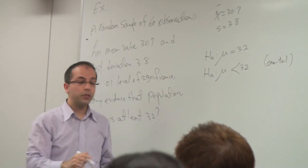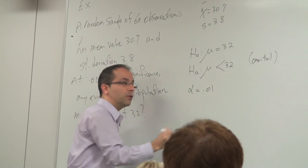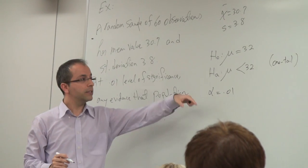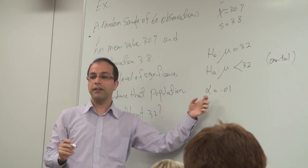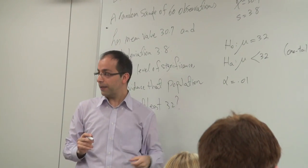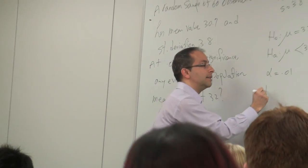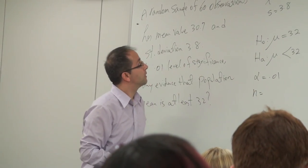Then we choose α. Alpha is given as 0.01. It is a one-tail test, so you do not have to find α/2—we will work with α. And n, the sample size, is 60 observations.